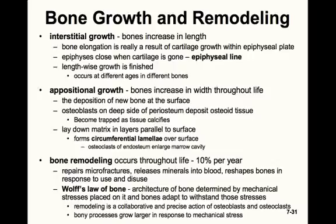Both interstitial and appositional growth happen throughout a person's growth phase of life. After growth is complete, we still see constant bone remodeling — about 10% of bone material is exchanged each year. Bone remodeling is also involved in repairing fractures, releasing minerals into the blood, and reshaping bones in response to use and disuse. The more stress applied to a bone, the more osteoblasts are stimulated to produce denser bone, so weight-bearing and strenuous exercise make bones much stronger.